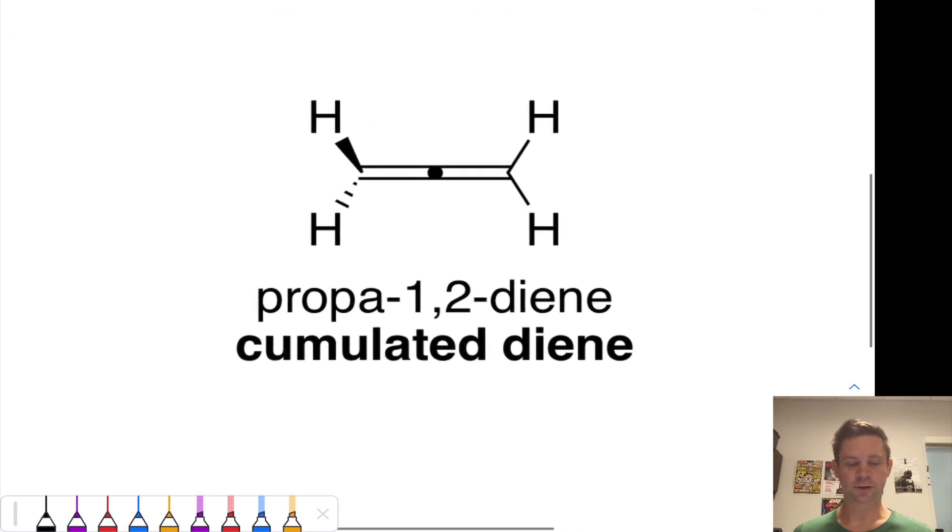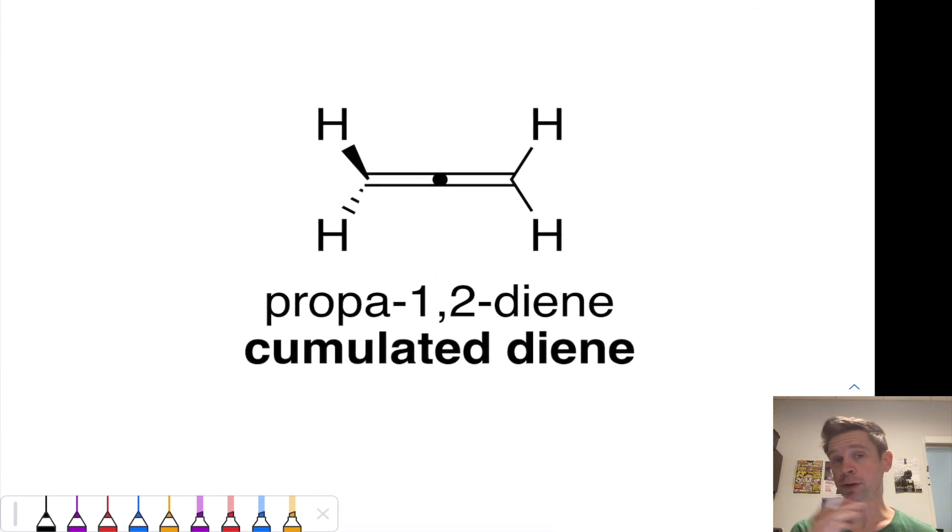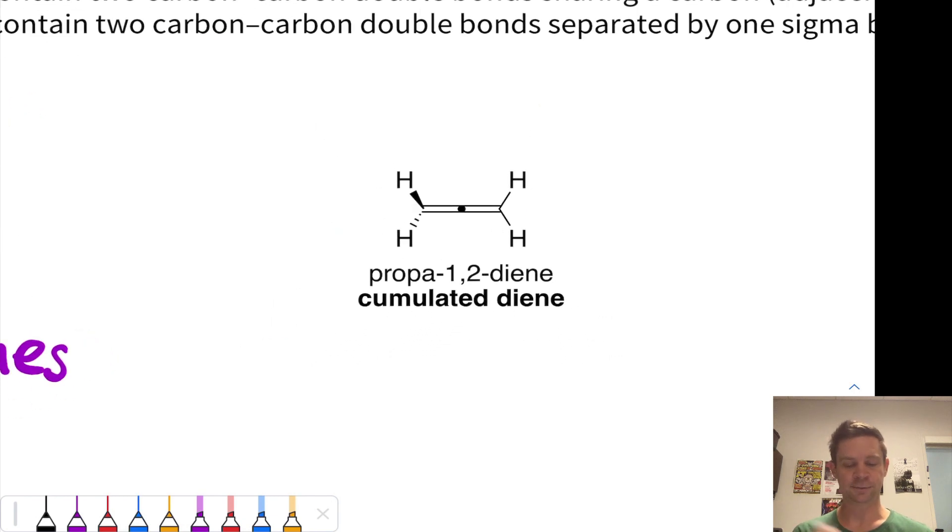In the middle here, we have what's called a cumulated diene. The hallmark of a cumulated diene is that two carbon-carbon double bonds are sharing a central carbon. Where you see this black dot in the middle, there's actually a carbon there. That carbon has sp hybridization. This particular structure with two carbon-carbon double bonds sharing a central atom is known as an allene.